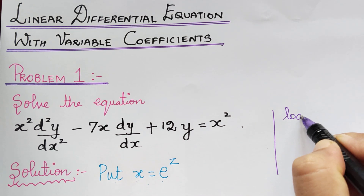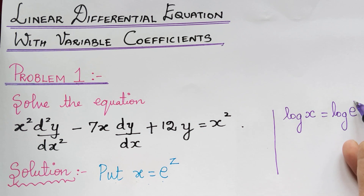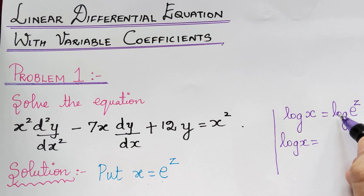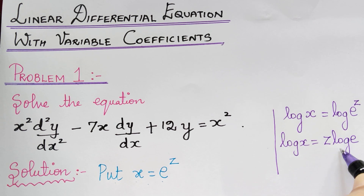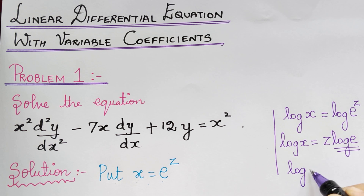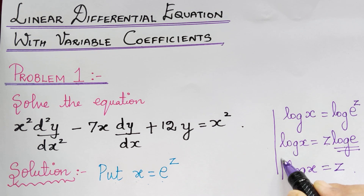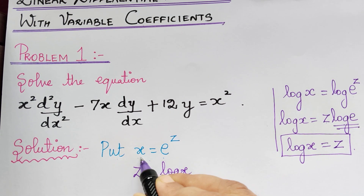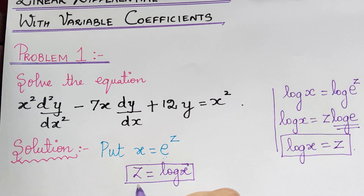Taking logarithm on both sides, we have log x equal to log(e^z), and therefore log x equals z·log e. But the value of log e is 1, so log x equals z multiplied with 1, which is z. Therefore we have obtained z equal to log x.